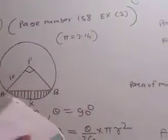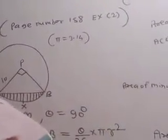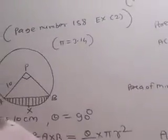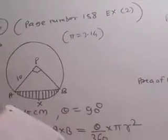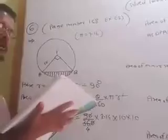Example number 158. Example number 2. So write the example from the book: The radius of the circle with center P is 10 cm. If chord AB of the circle subtends a right angle at P,